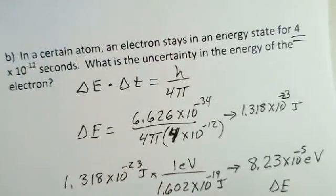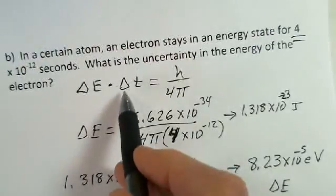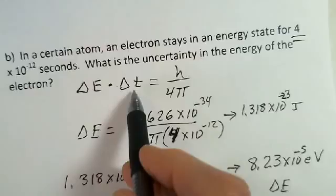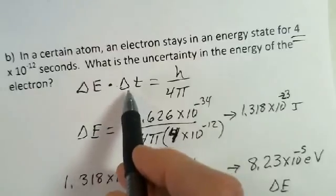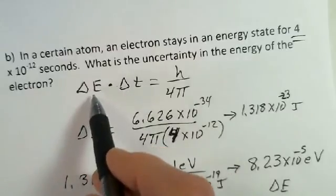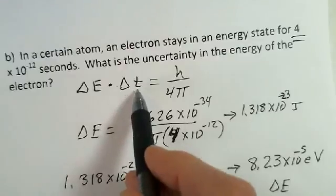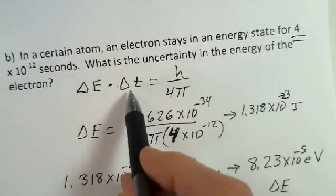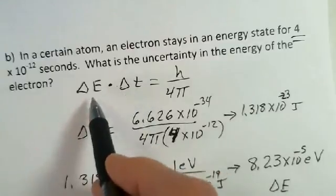Again, if we would make the time longer, the electron would be in that energy state for a longer time. Delta e would be smaller. Or if we would choose an energy state where the electron is there for a shorter time, delta t is smaller, then delta e would be larger.